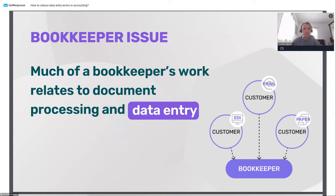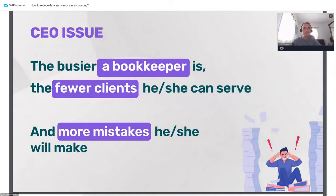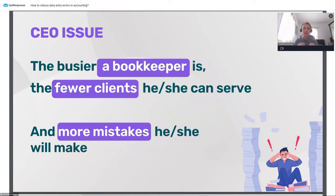From a top management view, the main statement is: the busier the bookkeeper, the fewer clients they can serve, and as a result, more mistakes will be made. If we can speed up the process of data entry, each accountant will be able to work with 40 clients instead of 10 — very roughly speaking. As a result, your business will be growing significantly.